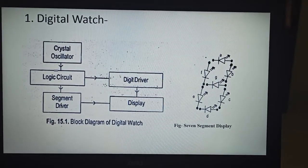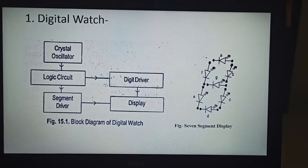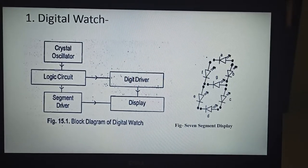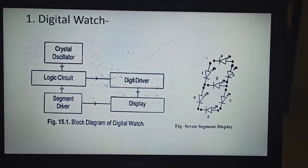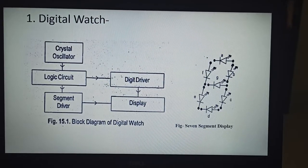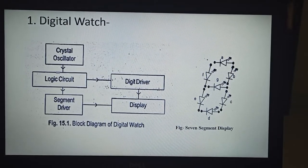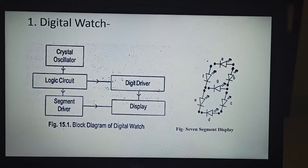A digital watch displays time in hours and minutes. It consists of a quartz crystal oscillator, logic circuit, digit driver, segment driver, and display. The figure shows the crystal oscillator, logic circuit, segment driver, display, and digit driver.